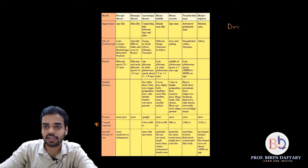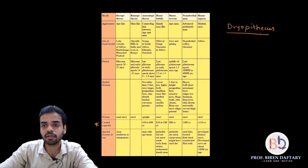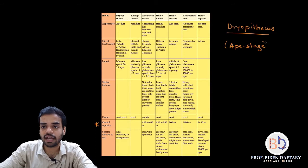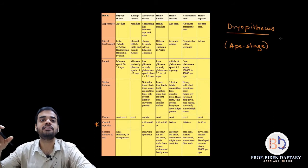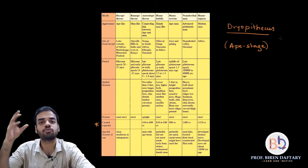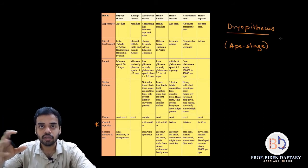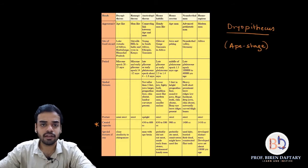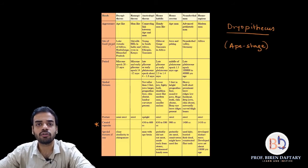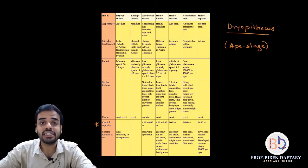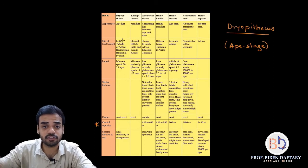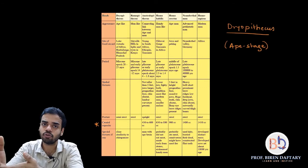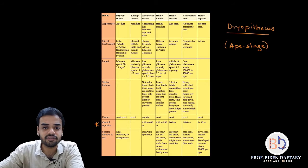The first stage is Dryopithecus, called the ape stage — it looks like a small-sized ape. The fossil was found near Lake Victoria in Africa and also in Himachal Pradesh, India. The time period is the Miocene epoch, approximately 20 to 25 million years ago. Please remember at least one fossil site and the epoch name.